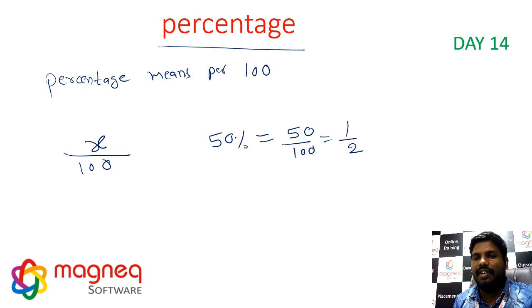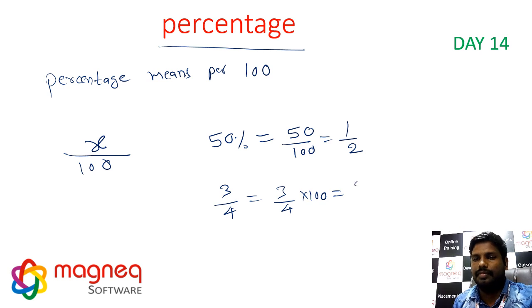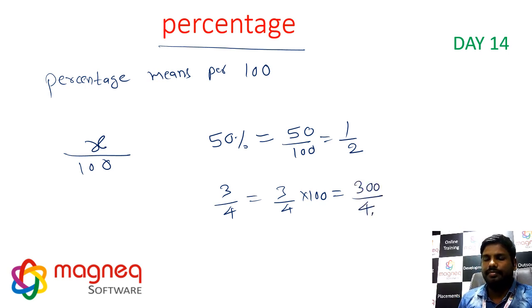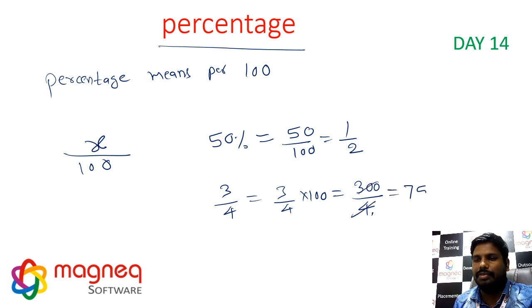Next, fraction convert into percentage. For example, 3 by 4: multiply 3 by 4 with 100, giving 300 by 4, which means 75 percentage.